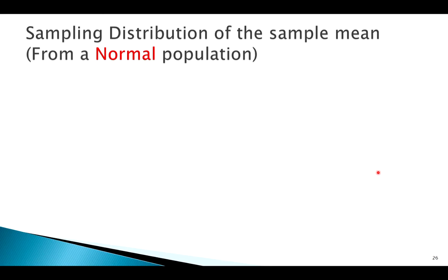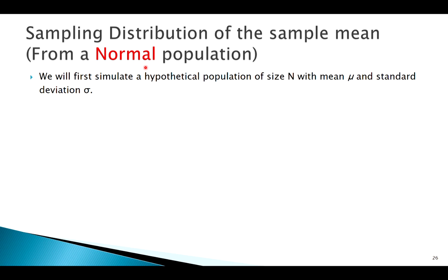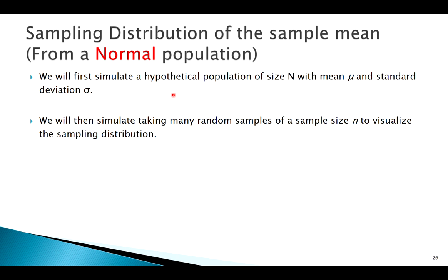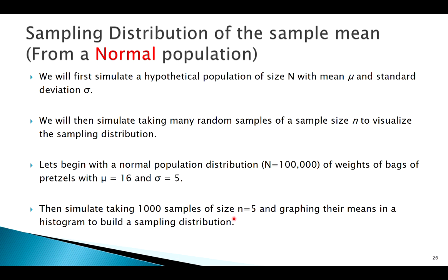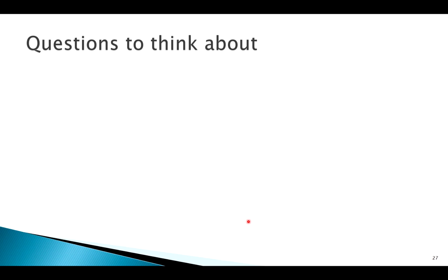Let's simulate building a hypothetical sampling distribution. The key here is we're sampling from a normal population. Capital N denotes our population size, mu is the mean, Sigma is the standard deviation. We're going to take a bunch of samples of sample size n and build these hypothetical sampling distributions. Say our population was made of a hundred thousand bags of pretzels — normal population, mean of 16, standard deviation of 5. I'll start by taking a thousand samples of size 5, calculating the mean of each, graphing them in a histogram, and that will give us our sampling distribution.